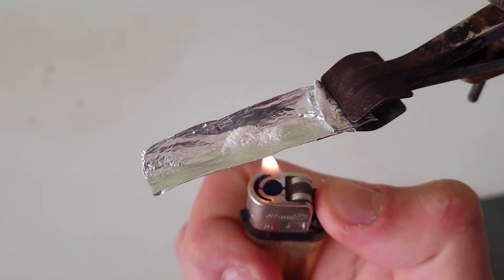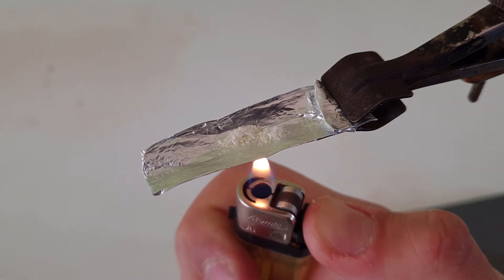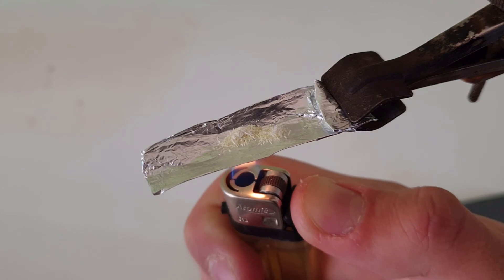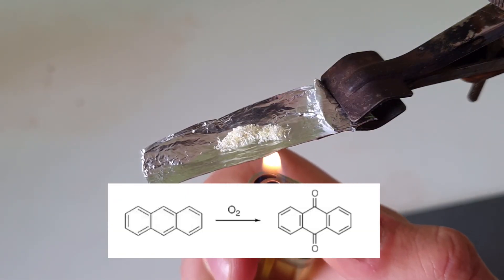The dimer also decomposes at its melting point at about 265 to 275 degrees Celsius, theoretically forming anthracene. But in air, it of course oxidizes to anthroquinone, which tinges the powder slightly yellow.